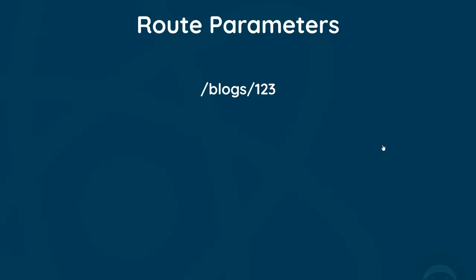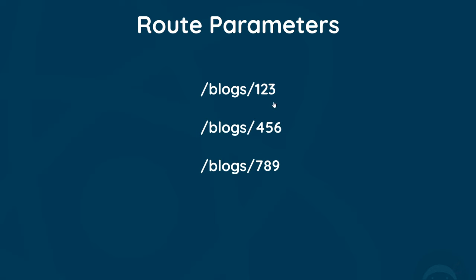Sometimes we need to pass dynamic values as part of a route — a route where a certain part is changeable, but regardless of what that changeable part is, it still renders the same page or component. An example of this is a blog details page, where the route might look like /blogs/123, where 123 is the id of the blog. That id could easily be 456 or 789, and in those cases we'd still render the same blog details component.